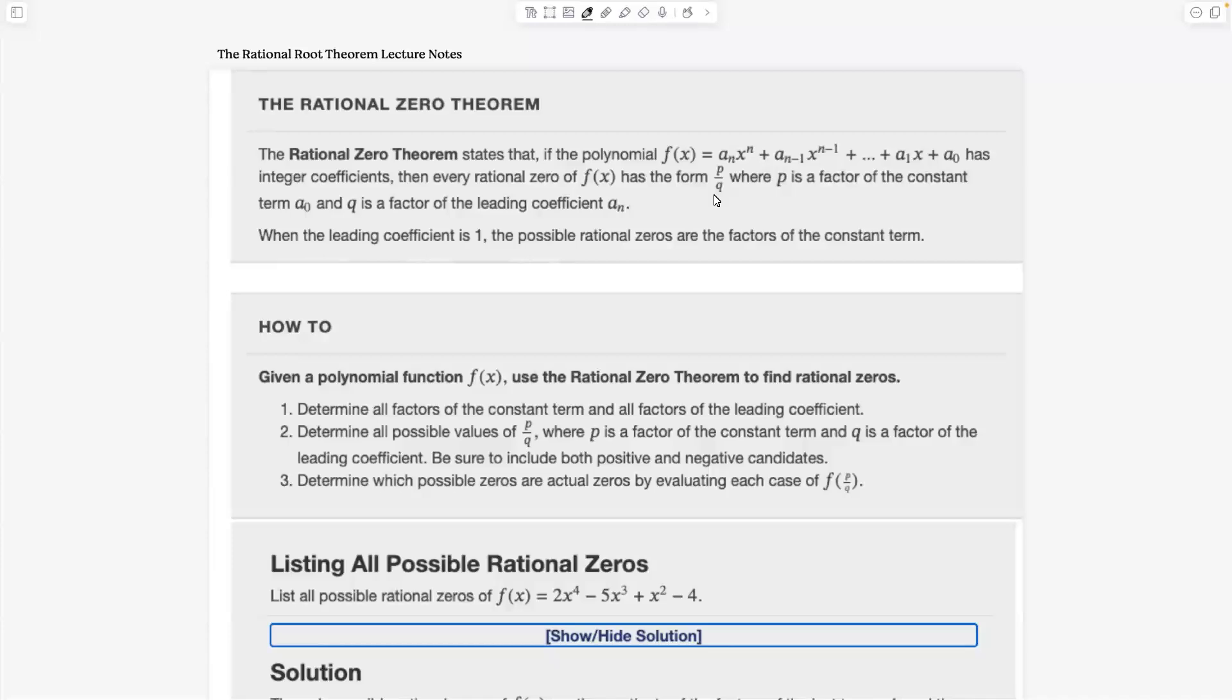But if it does have any rational roots, then all of them will have the form where the top is a factor of this guy, the constant term at the end, and your denominator is a factor of your leading coefficient.